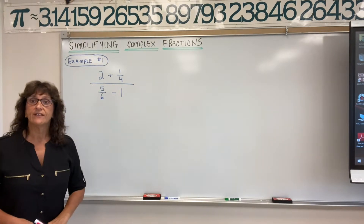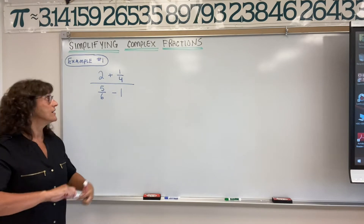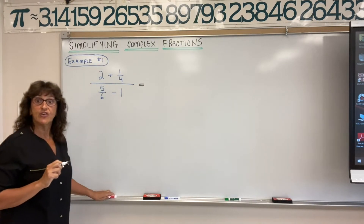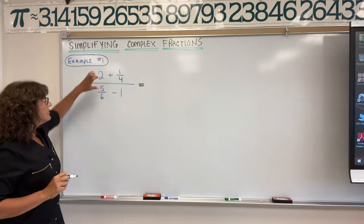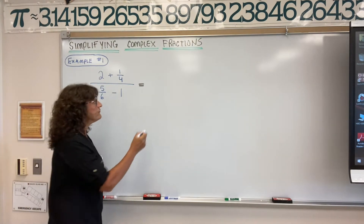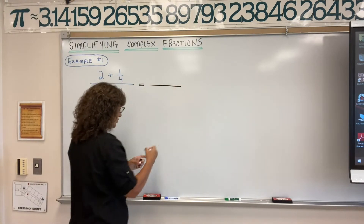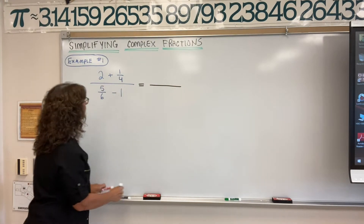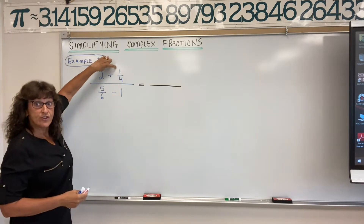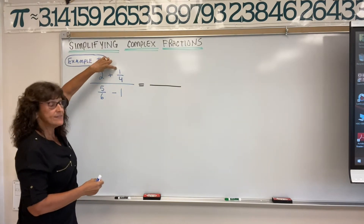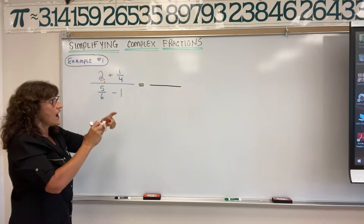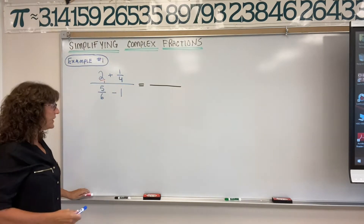We want to simplify this so we can get a value and it's not in complex fraction form. So the first method we're going to talk about: take the numerator and denominator and write them as one term, one fraction. So we're going to take the numerator and denominator — we want to take these two terms in the numerator and write them as one term, combine them. So putting the two over one, let's get a common denominator for the numerator alone.